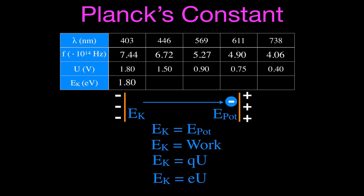These electrons move through a lower potential because this light has less energy, so their kinetic energy is going to be 1.5 electron volts, then 0.9, 0.075, and 0.40 electron volts. So now we have the frequency and the maximum kinetic energy of those electrons, and we can produce the graph on the next slide.